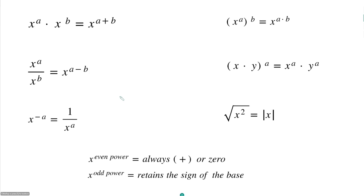Our first rule says X raised to the A times X raised to the B is equal to X raised to the A plus B. Note that pretty much all of our exponent rules deal with either multiplication or division of exponents. There really are no exponent rules when we are adding or subtracting exponents — within some rules we may add or subtract powers, but if you're given that situation, don't make up a rule that doesn't exist. When multiplying exponents with the same base, we add the powers.